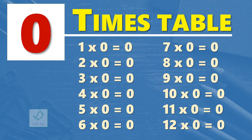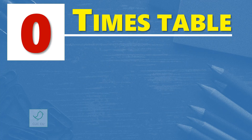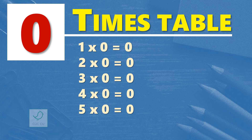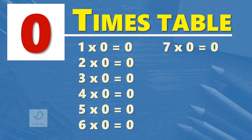Multiplication table of 0. 0 times table. 1 times 0 is 0. 2 times 0 is 0. 3 times 0 is 0. 4 times 0 is 0. 5 times 0 is 0. 6 times 0 is 0. 7 times 0 is 0.